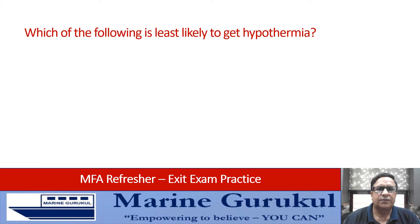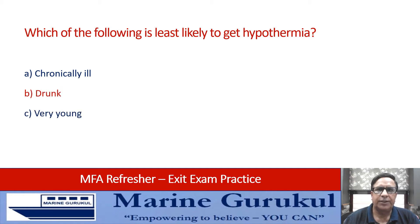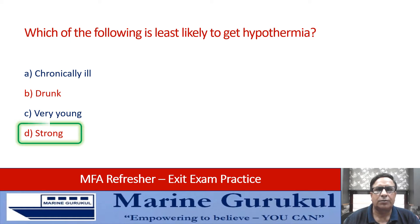Regarding hypothermia, which of the following is least likely to get hypothermia? Chronically ill, drunk, very young, or strong people? If you are physically strong, you have a better ability to withstand cold and lesser chances of getting hypothermia. The answer is D — strong people.